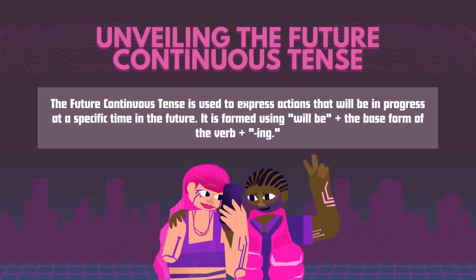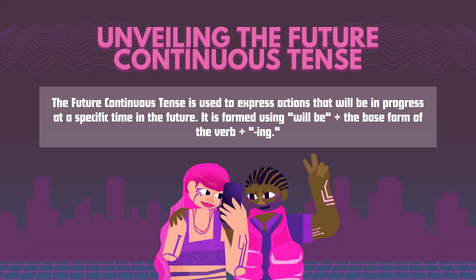Unveiling the Future Continuous Tense: The Future Continuous Tense is used to express actions that will be in progress at a specific time in the future. It is formed using 'will be' plus the base form of the verb plus '-ing'.